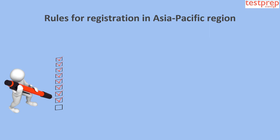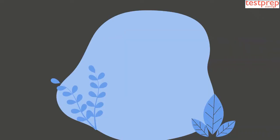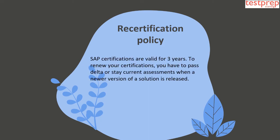Rules for registration in the Asia Pacific region: The rules for registering for SAP certification are considerably different in Asia Pacific countries, including India. 1. To appear for associate-level certification without attending an SAP course, you need a minimum of one year of SAP implementation experience or two years of support experience, with at least six months in the module and version you are getting certified in. 2. The last year of your work experience should be with your present employer. 3. Your present employer should be either a customer or a partner of SAP.